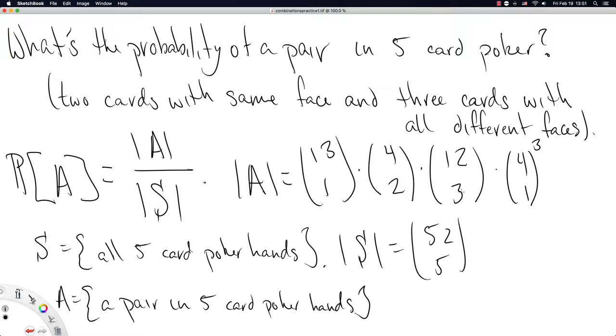There are three other cards you need to pick. Since you already have one face specified, there are 12 remaining faces to specify. You choose three of those. Of each face, there are four cards available and you want one of each. You do that three times.